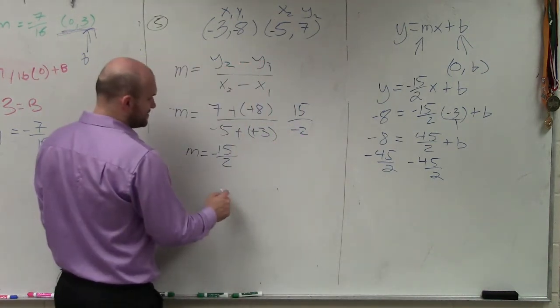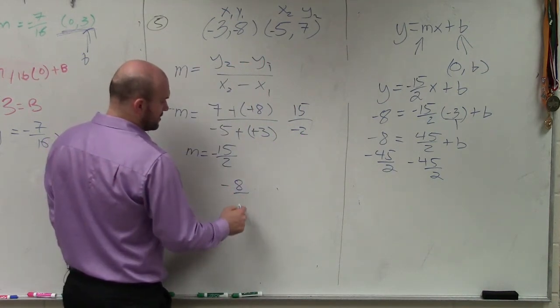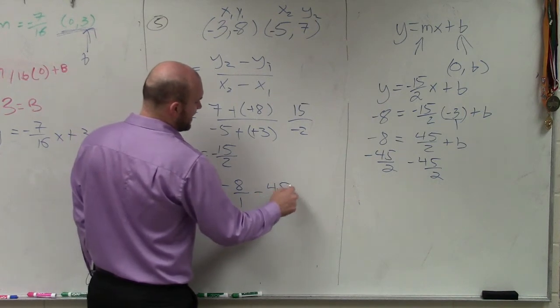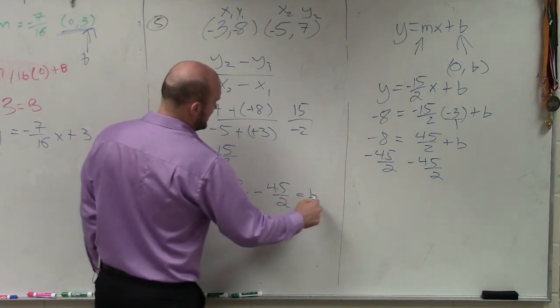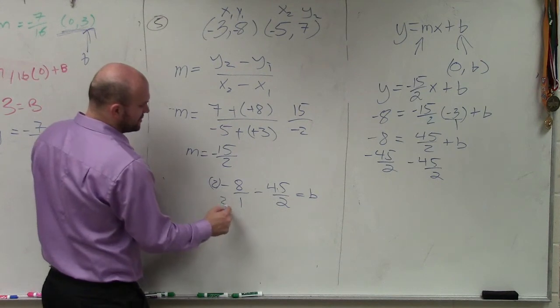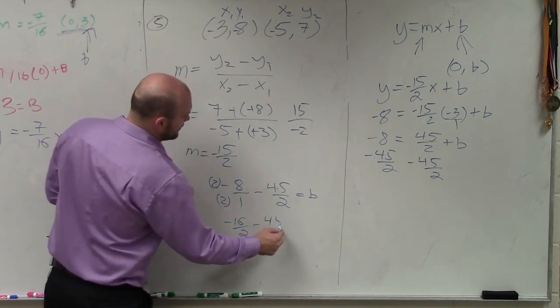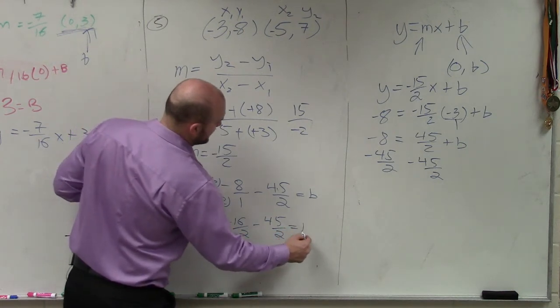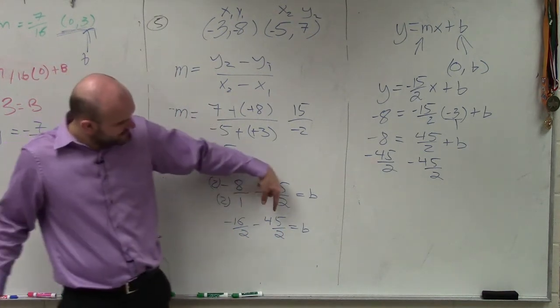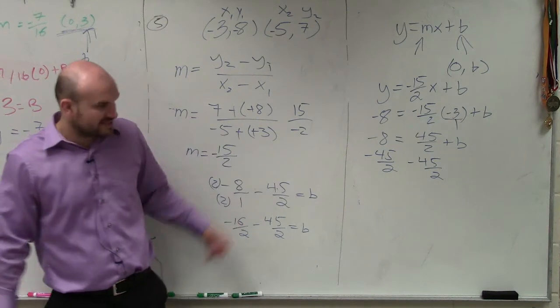Remember to get this, we have to have common denominators. So I'll write negative 8 over 1 minus 45 over 2 equals b. Got to get common denominators. So I'll multiply by 2 over 2. So I have negative 16 over 2 minus 45 over 2 equals b. Negative 16 minus 45 is going to be negative 61 over 2.